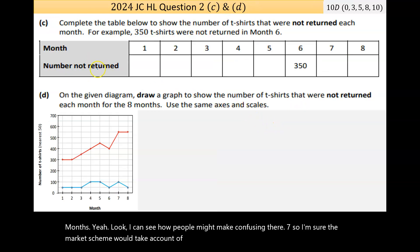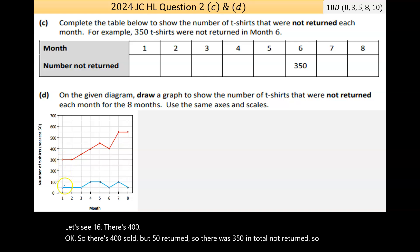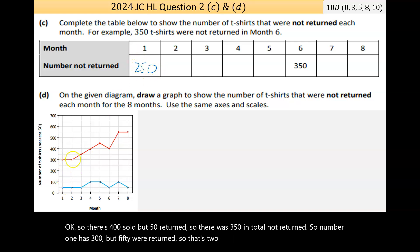Now part C and D are marked together and are worth 10 marks. Complete the table below to show the number of t-shirts that were not returned each month. For example, 350 t-shirts were not returned in month 6. Month 1 has 300 sold but 50 returned, so that's 250. Month 2 is the same, that's 250. Month 3 has 350 sold but 50 returned, so that's 300. Month 4 sold 400 but 100 returned, so that's 300. Month 5, 450 were sold but 100 returned, so that's 350.